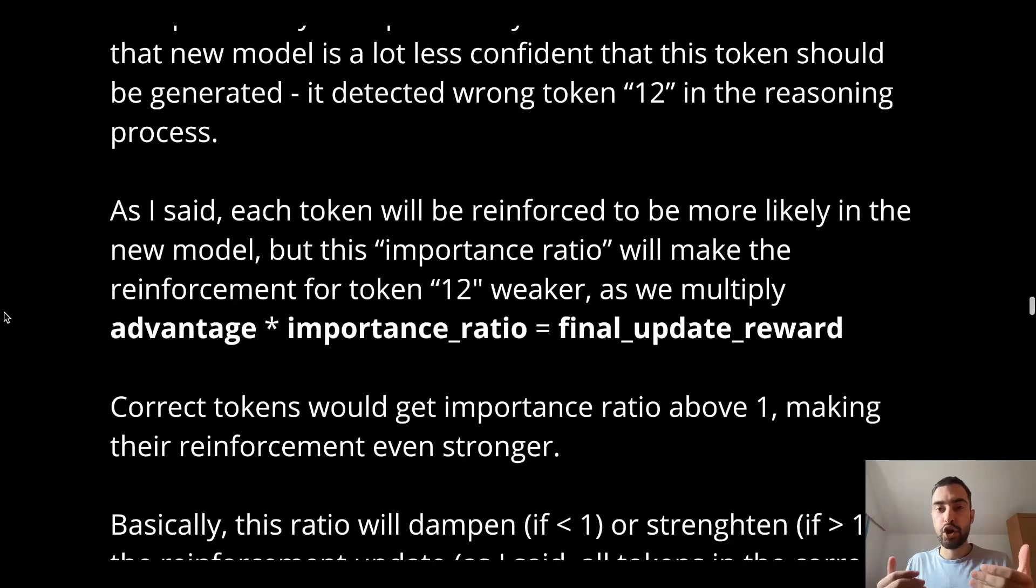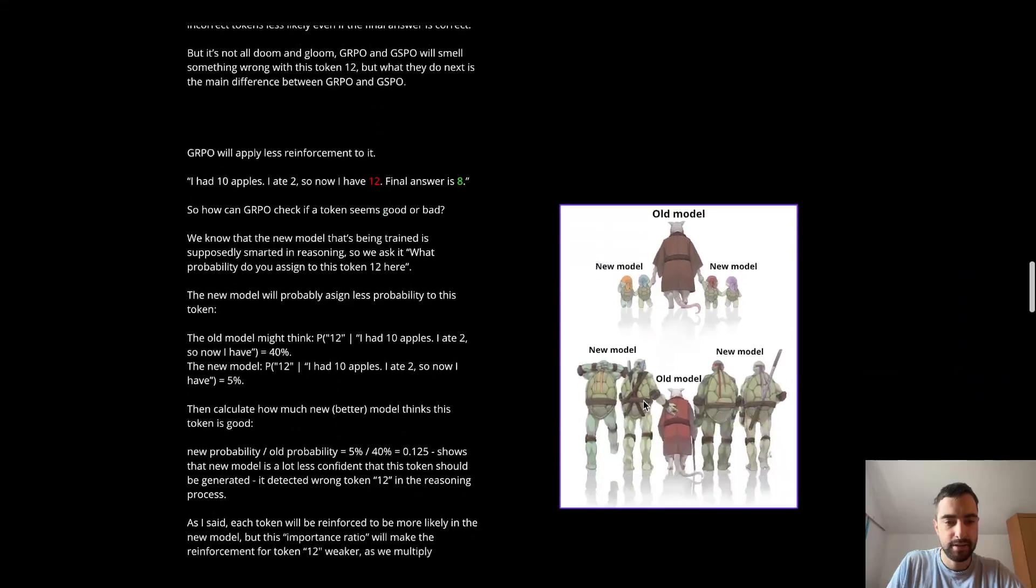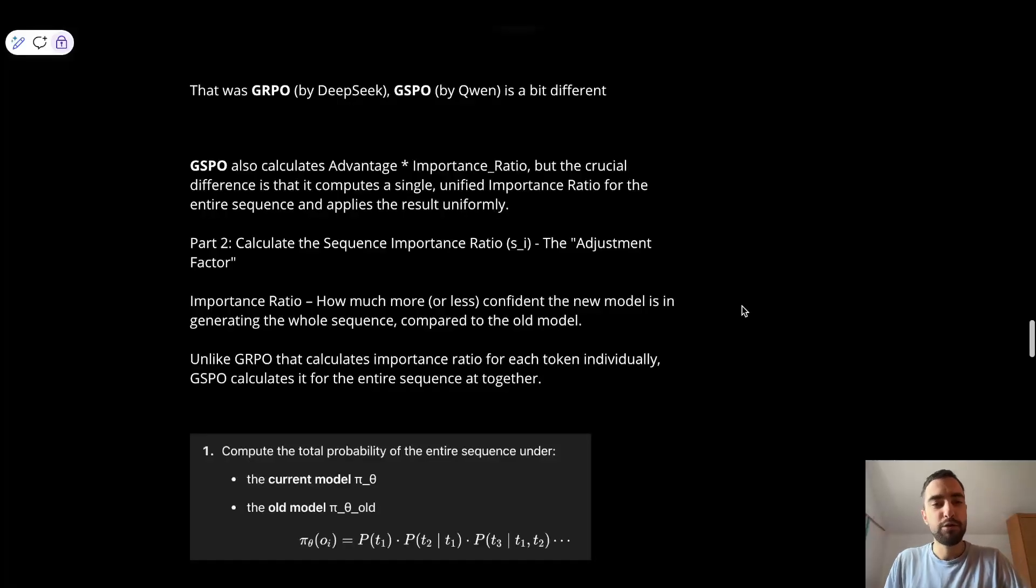As I said in the future, maybe we should punish the wrong tokens even if the answer is correct. And punishing just means changing the weights of the model, so this token is less likely to generate if we have this previous sequence of tokens. Just to show you this entire text. So that was how GRPO works.